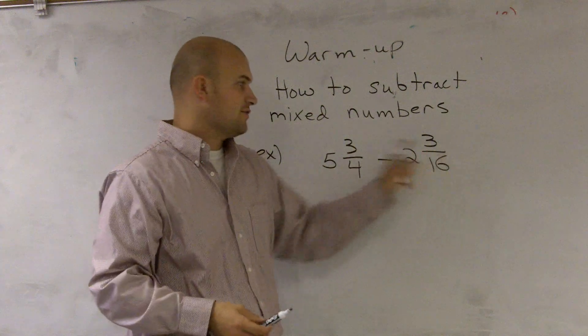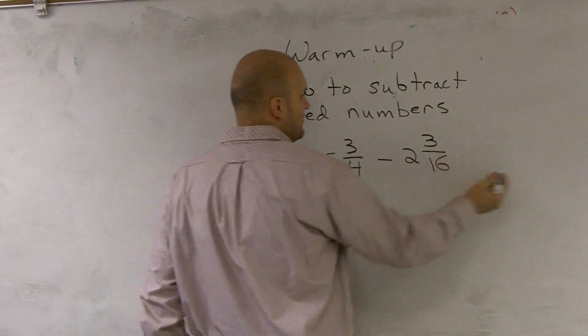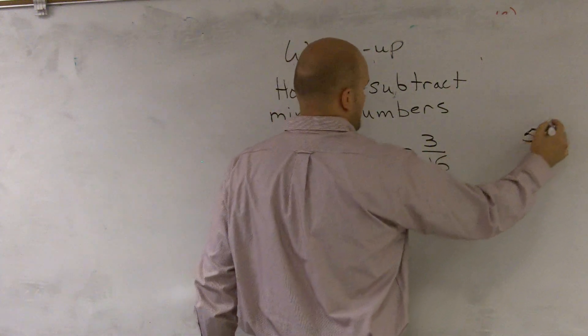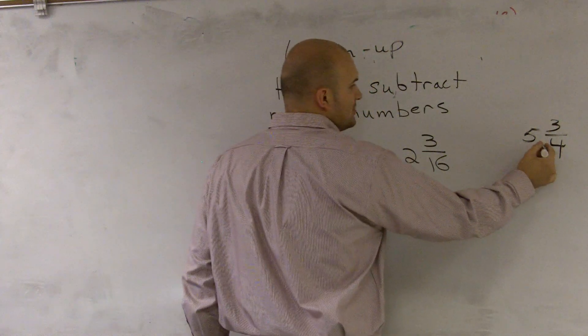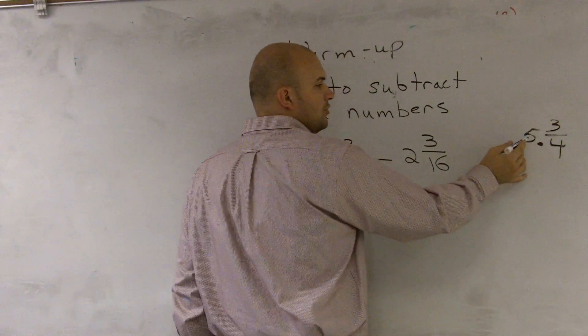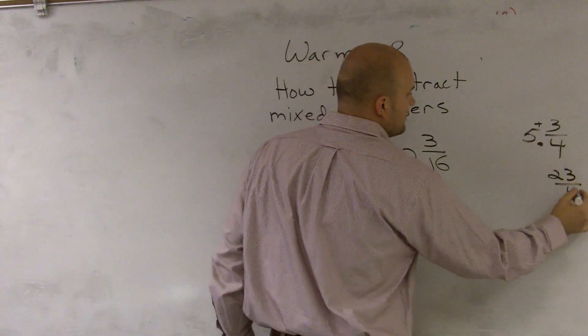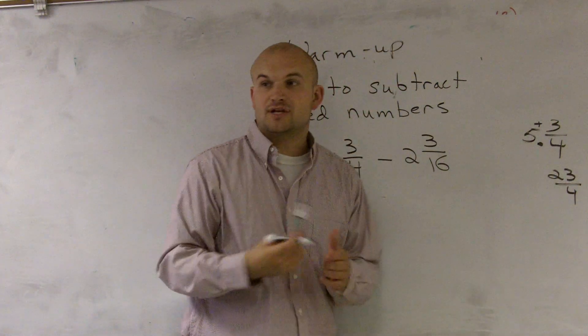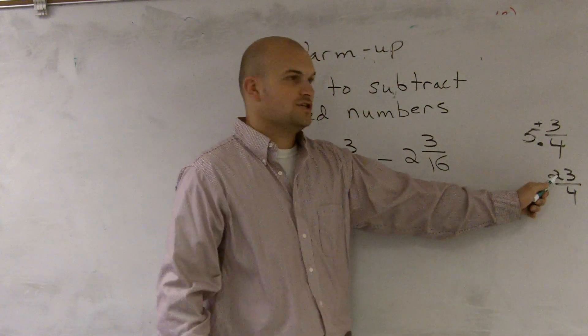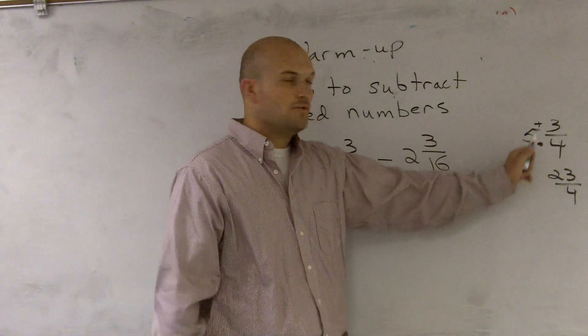I'll show you how to convert a mixed number to an improper fraction. What we do is multiply our denominator times our whole number and then add our numerator, so I get 23 over 4. How can I double check to make sure I did that correctly? I say 4 goes into 23 five times with a remainder of 3.